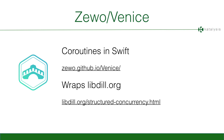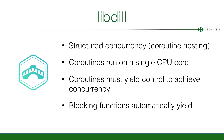The coroutine part is basically embedding a library called libdil into a Swift library called Venice, which gives structured concurrency to Swift. Structured concurrency means being able to nest coroutines and make sure that when the parent coroutine dies, the child also dies.